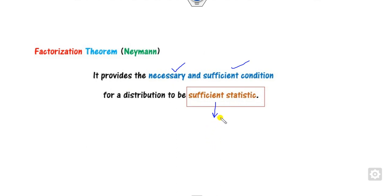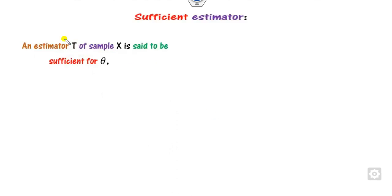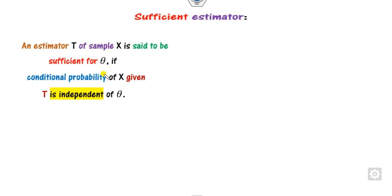Now, the first question that arises is: what is a sufficient statistic? Although we have already discussed this in our previous lecture, let me quickly recall within one minute. Any estimator T of the sample space X is said to be sufficient for the parameter theta if the conditional probability of X given T is independent of theta.